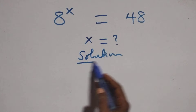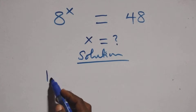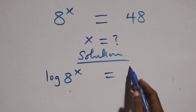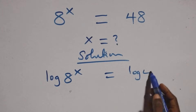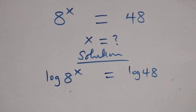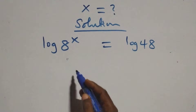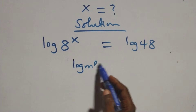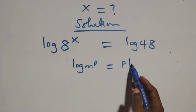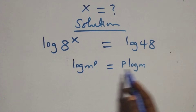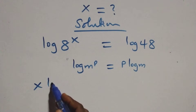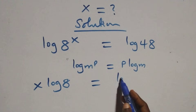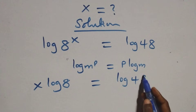What we have here: we take the log on both sides. We have log x raised to the power x equals to log 48 on this side. The next step, we apply the power rule of logarithms: log m raised to power p is the same as p log m. So here we have x log 8 equals to log 48 on this side.